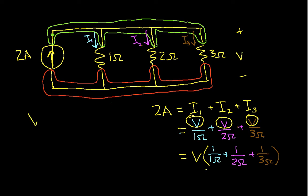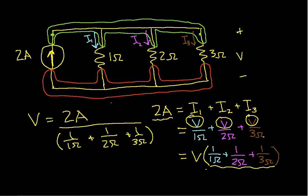So let's solve for V. We have V equals 2 amps divided by 1 over 1-ohm plus 1 over 2-ohms plus 1 over 3-ohms. I've taken this expression in the parentheses and put it in the denominator here.